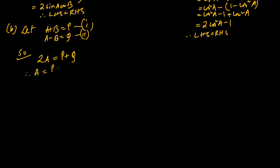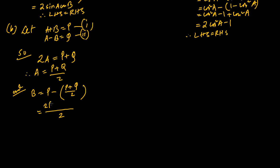Therefore A = (P + Q) / 2. To find B, write B = P − A. Substituting A = (P+Q)/2 and taking LCM: B = (2P − P − Q) / 2 = (P − Q) / 2. We now have both A = (P+Q)/2 and B = (P−Q)/2.